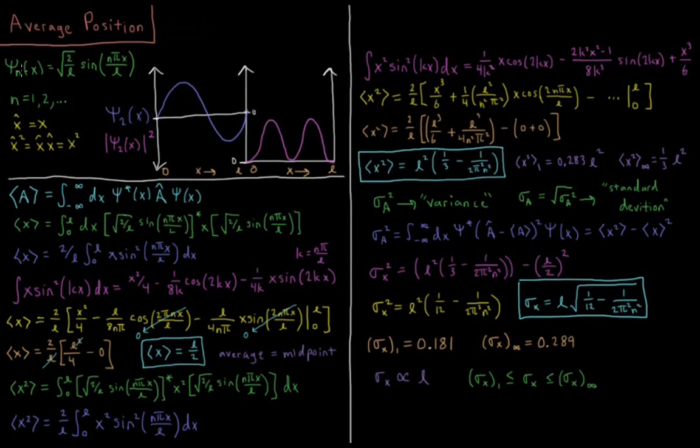In our particle-in-a-box model, we solve that the wave functions, the solutions or the eigenfunctions of the Schrödinger equation, the Hamiltonian operator, were that psi_n(x), n being our quantum number starting at 1 and going all the way up to infinity, equals square root of 2 over l, the length of our box, times sine n pi x over l.